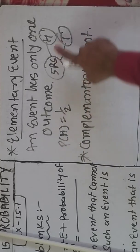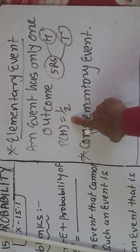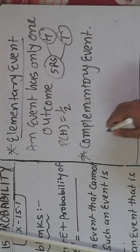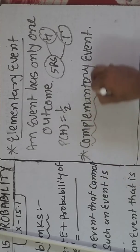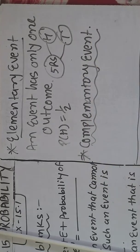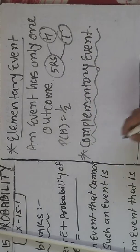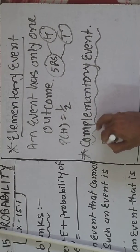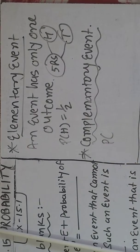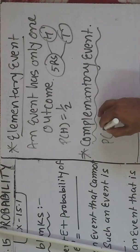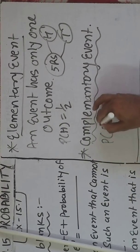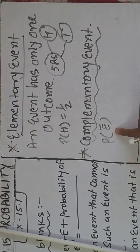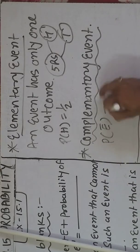Aisi jo bhi event hoti hai guys, usko kya bolenge? Elementary event. And now what is a complementary event? Complementary event kya hai? Toh jo event na hone ki probability hai, that is denoted by P(E bar) — E bar se isko denote karenge.